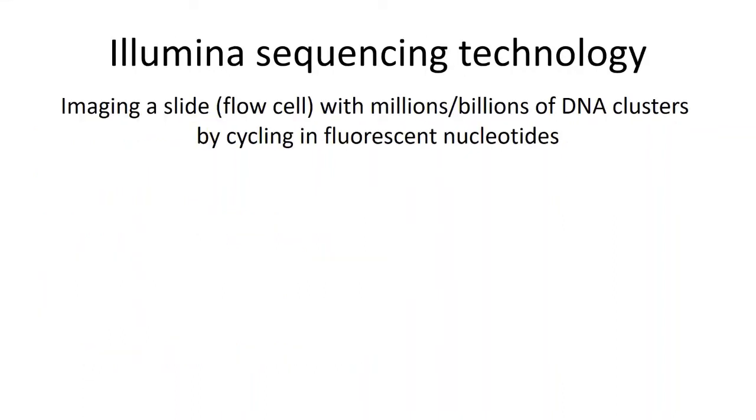When you strip it down to the basics, Illumina sequencing technology is imaging a slide or flow cell with millions or billions of DNA clusters by sequentially cycling in fluorescent nucleotides.